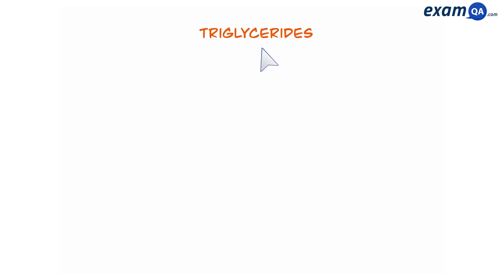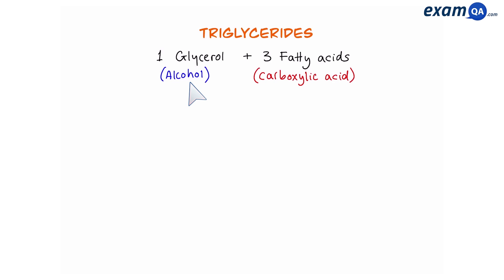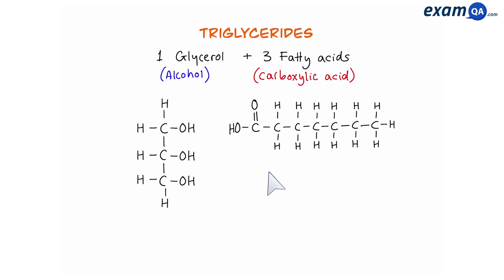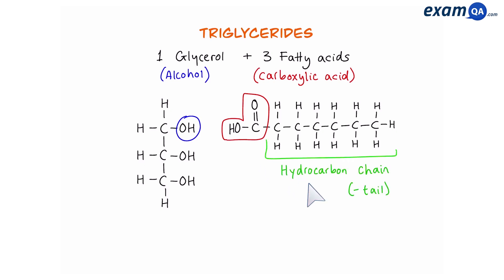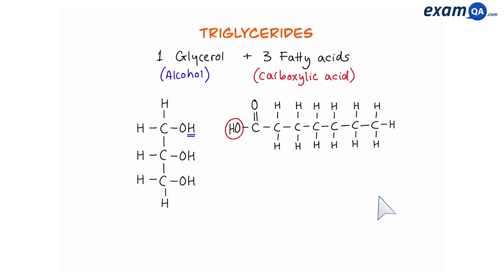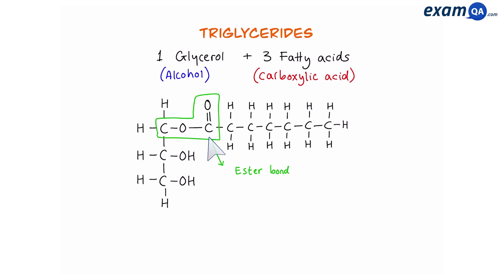So let's look at triglycerides. A triglyceride is made of one molecule of glycerol joined with three fatty acids. A glycerol is a type of alcohol, and fatty acids are derived from carboxylic acids. The OH group is the functional group of an alcohol, and the C double bond O with an OH is the functional group of a carboxylic acid. The reason it's called a fatty acid is because of this long hydrocarbon chain, sometimes referred to as a tail. When they come together, the H from the alcohol and the OH from the fatty acid join together in a condensation reaction, creating an ester bond.